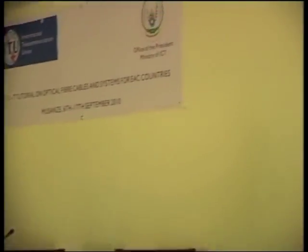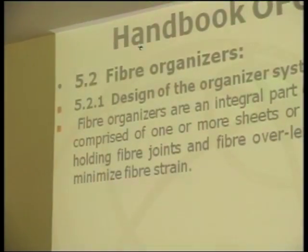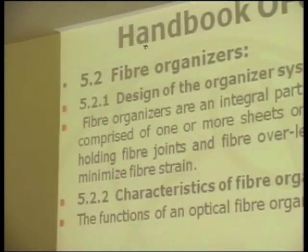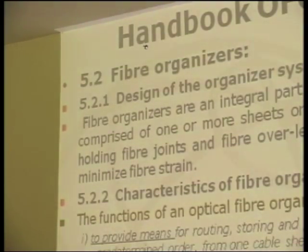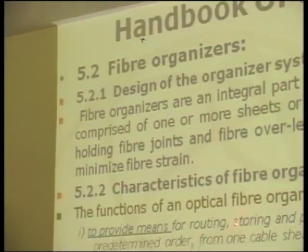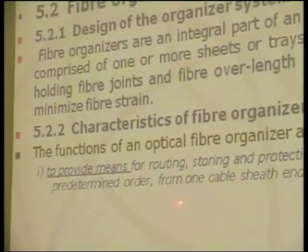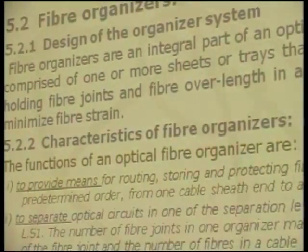Regarding the fiber organizer and specifically its design, the organizer must be considered an integral part of the optical closure. Organizers are comprised of one or more sheets or trays that have means for routing and holding fiber joints and fiber overlength. They must be designed to do this in an orderly manner and in a way that minimizes fiber strain. The organizer must provide means for routing, storing, and protecting optical fibers and passive devices in a predetermined order from one cable to another.